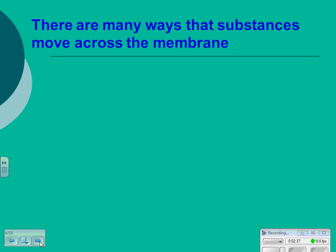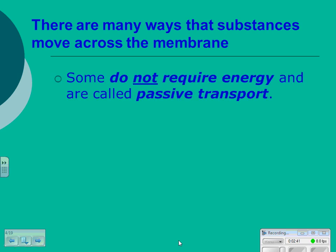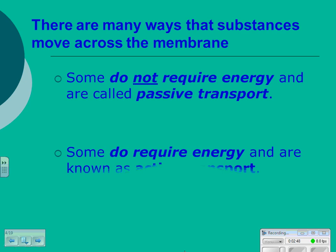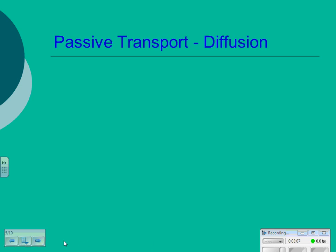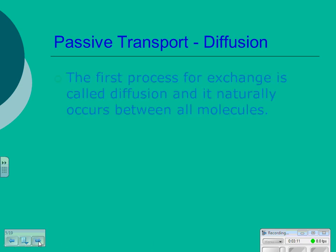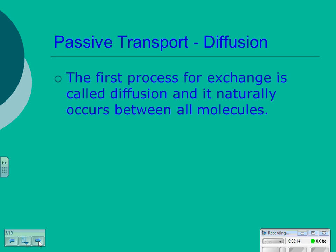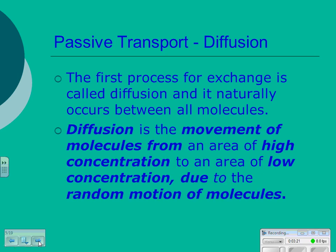There are a lot of different ways that substances can move across the membrane. If the method does not require energy, it is known as passive transport. Like when you're active and moving around you're expending energy, but when you're passive and sitting on the couch it doesn't require a lot. The first example of passive transport is diffusion, something that naturally occurs between all molecules regardless of whether a cell is involved. By definition, diffusion is the movement of molecules from an area of high concentration to an area of low concentration due to the random motion of molecules.